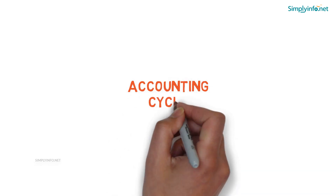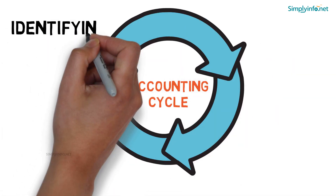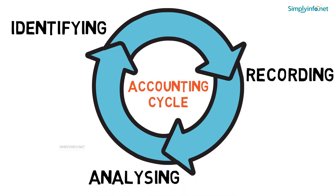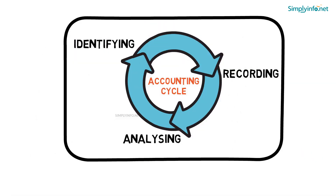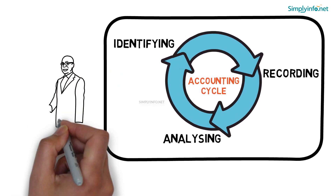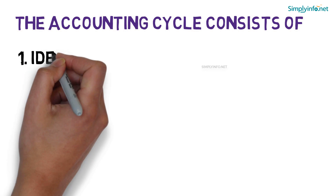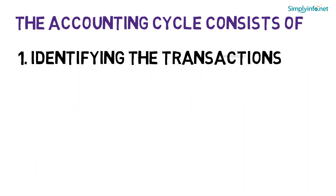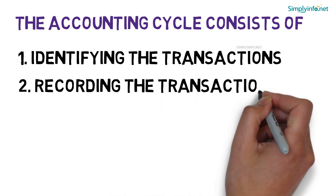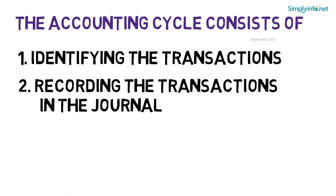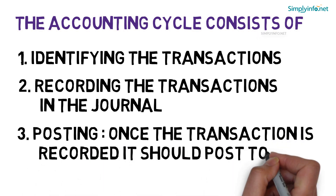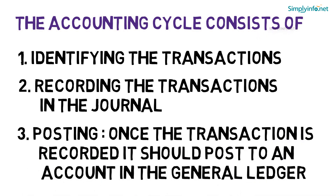The accounting cycle is the process of identifying, recording, and analyzing accounting events — which are the payments made and received during a particular accounting period. The closing of the accounting cycle gives business owners the financial performance report used to analyze the business. The accounting cycle consists of: 1. Identifying the transactions. 2. Recording the transactions in the journal. 3. Posting — once a transaction is recorded, it should be posted to an account in the general ledger.